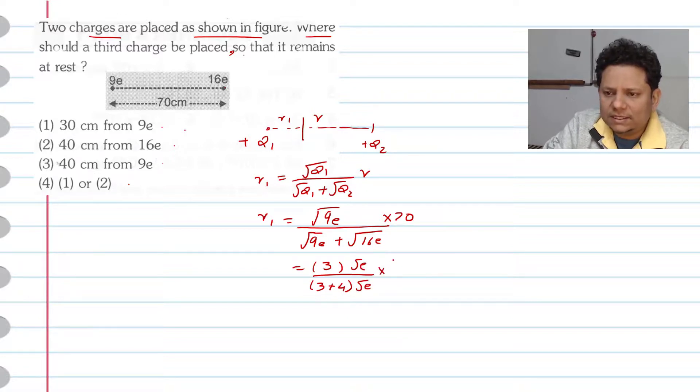Here you take square root of E common from both, you can directly replace this, this will cancel. So this is 70, this equals 3 divided by 7 multiplied by 70, which equals 30.